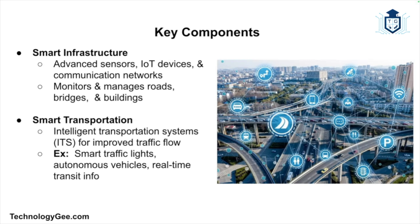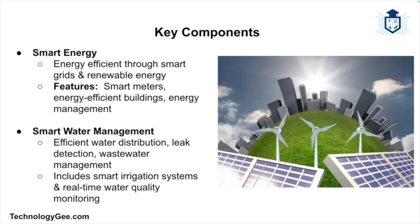A smart city integrates various technologies and systems to enhance urban living. Smart infrastructure incorporates advanced sensors, IoT devices, and communication networks to monitor and manage city infrastructure such as roads, bridges, and buildings. Smart transportation utilizes intelligent transportation systems to improve traffic flow, reduce congestion, and enhance public transit — examples include smart traffic lights, autonomous vehicles, and real-time transit information. Smart energy focuses on efficiency and sustainability through smart grids and renewable energy sources.